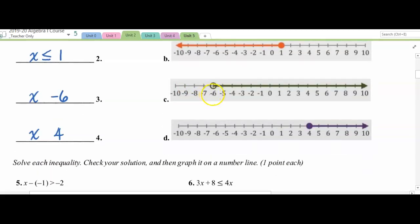C, it is shaded above 6 to the right of 6, greater than negative 6 rather. And finally, D is greater than or equal to 4.